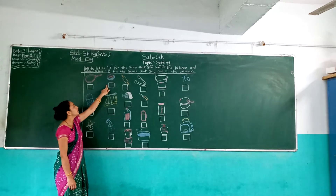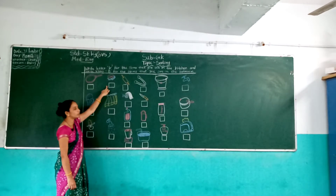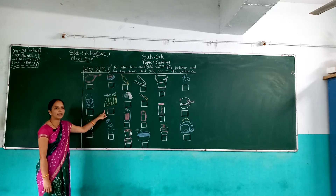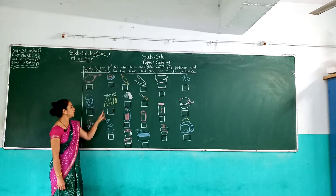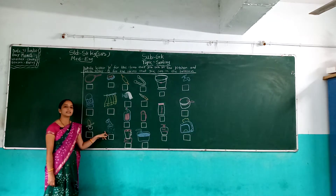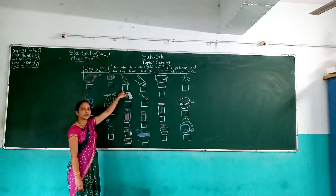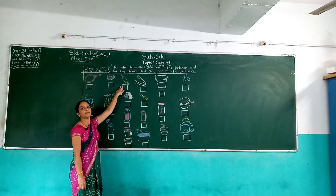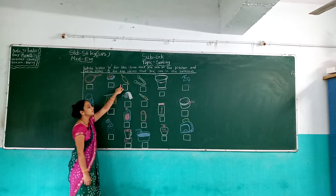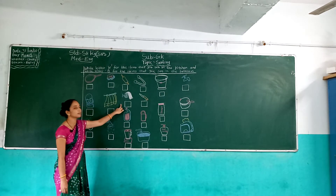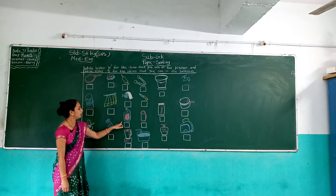And next, soap. Soap कहाँ use करते हैं हम? Bathroom में. And next, towel. Which picture is this? Towel — towel हम bathroom में use करते हैं. And next, shower. Shower कहाँ होता है? Bathroom में. And next, which picture is this? Rolling pin — mama इससे रोटी बनाती है न? Yes. This picture is rolling pin. And next, tissue paper. Which picture is this? Tissue paper.